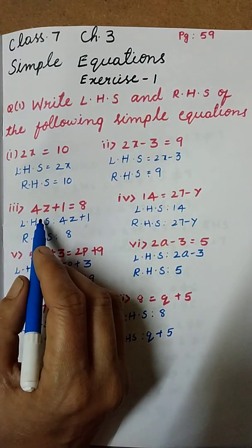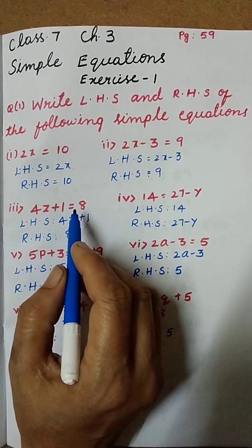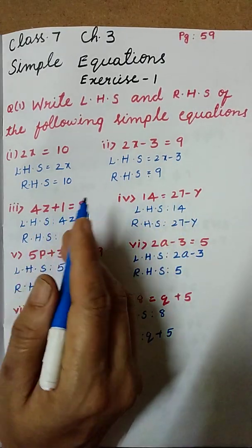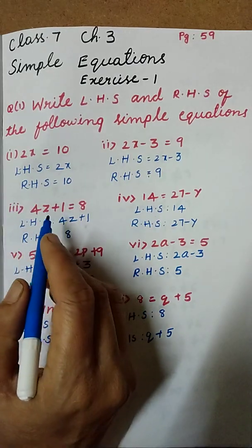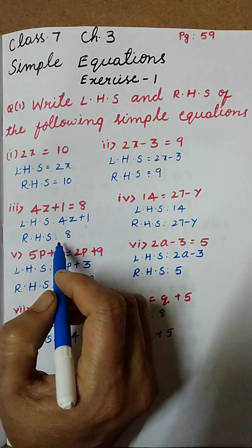Now next question: 4z plus 1 equal to 8. Here 8 is in our right hand side and 4z plus 1 is in our left hand side. That is why 4z plus 1 is LHS and 8 is our RHS.